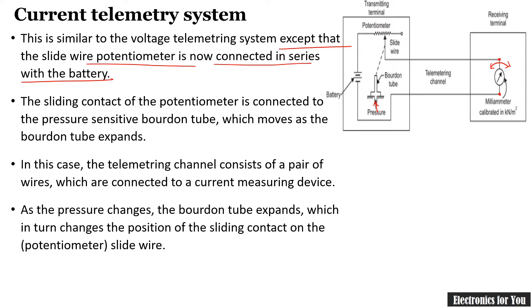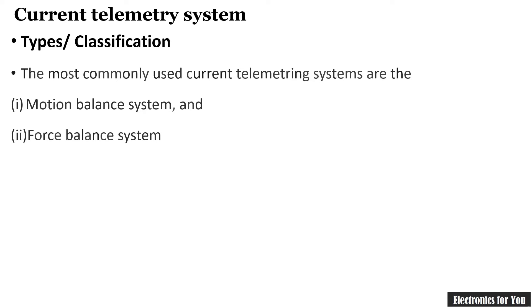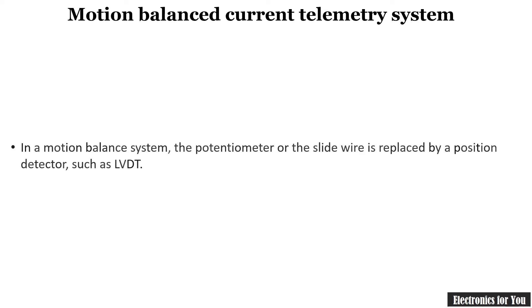The output of this current is in milliampere and the scale can be calibrated to read the pressure directly. The current telemetry system is classified into two different types: one is the motion balance system and another is the force balance system. These two are improved versions of the basic type seen previously.